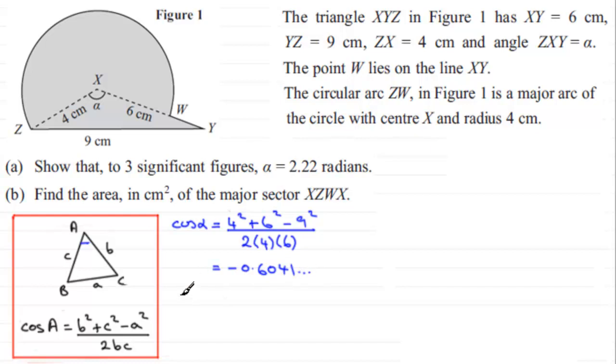So to get the angle alpha, all we've got to do is just take the inverse cosine of minus 0.6041, and so on. But what you've got to be careful is that make sure your calculator is in radians mode. And if you do that, you should find you get 2.2195, and so on, radians. So this is equal then to 2.22 radians if we just give it to three significant figures, which is what we're asked to do.